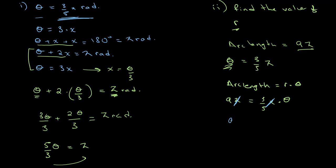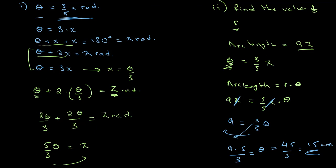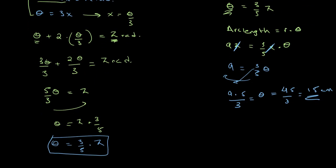From 9 equals 3 over 5 times r, we bring over the 5 and divide by 3: r equals 9 times 5 over 3, which gives 45 over 3, equalling 15. So r is equal to 15 centimeters.